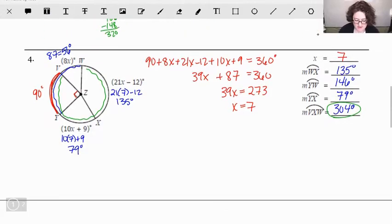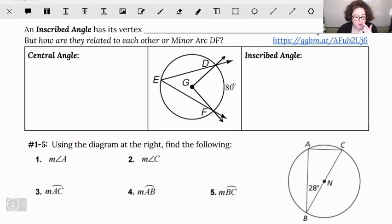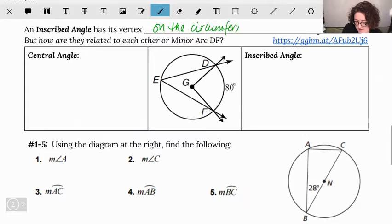All right, so the next thing we need to look at is the difference between central and inscribed angles. The central angle we already know has its measure exactly equal. An inscribed angle is different because instead of having its vertex at the center, it actually has its vertex on the circumference of the circle.